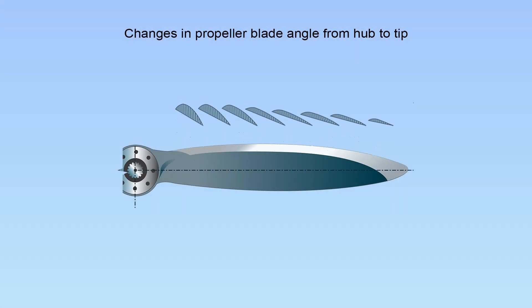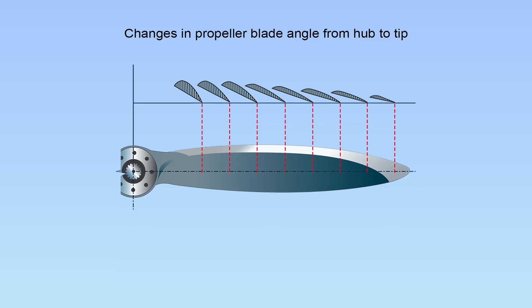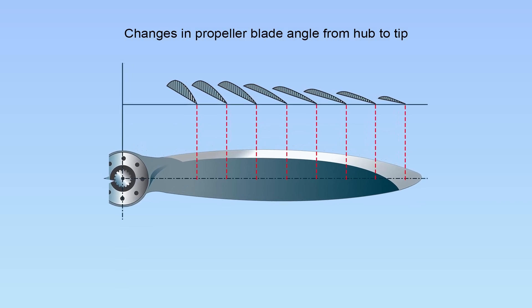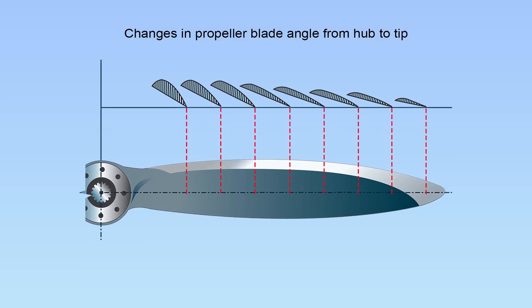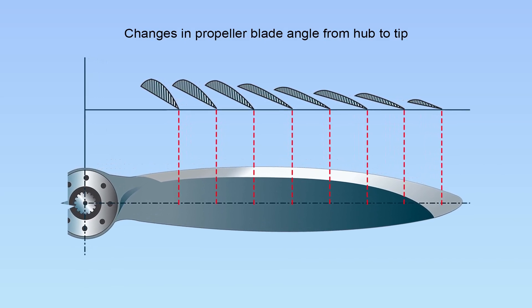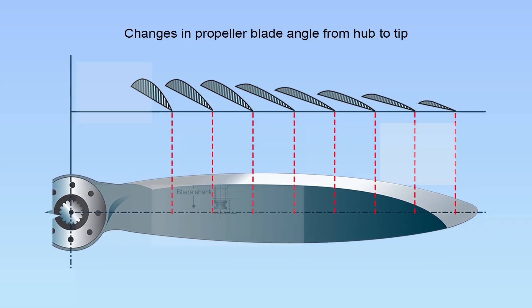To compensate for the difference in velocity along a propeller blade, the blade angle changes along its length. The gradual decrease in blade angle from the hub to the tip is called pitch distribution or twist. Blade twist enables a propeller to provide a fairly constant angle of attack along most of the length of the blade.